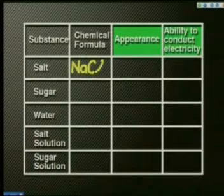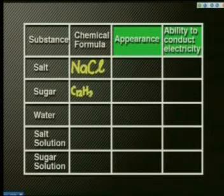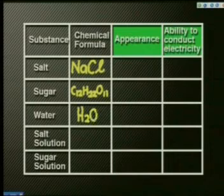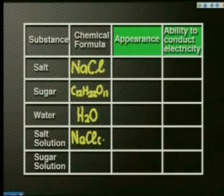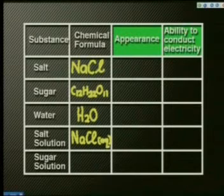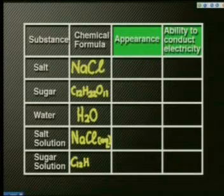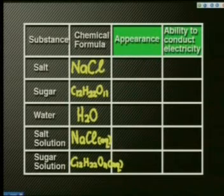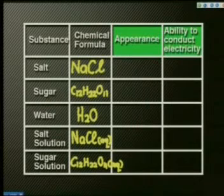The table salt that we use to change the taste of our food is mostly sodium chloride, NaCl. Sugar that we use to change the taste of tea is cane sugar or sucrose, C12H22O11. Water is of course H2O. A salt solution is a sodium chloride solution and a sugar solution is a sucrose solution. We use the abbreviation AQ for aqueous, from the Latin word aqua meaning water, to tell us that the sodium chloride and the sucrose are dissolved in water.